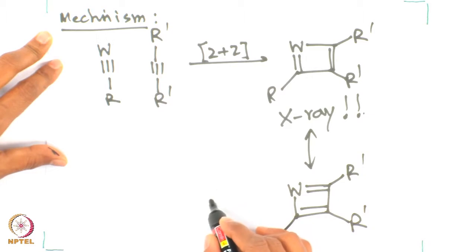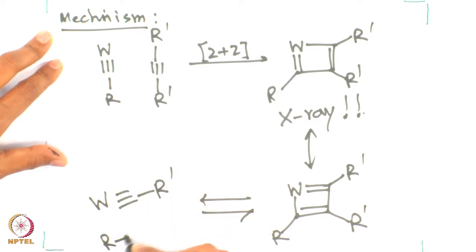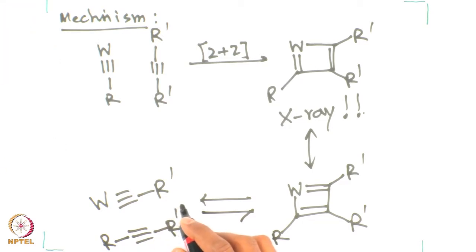Subsequently, undergoing retro 2+2, one can get a tungsten species with a new alkylidyne moiety. Overall, a new tungsten alkylidyne intermediate is obtained. Starting from the Schrock catalyst — tungsten alkylidyne — reacting with an alkyne gives a four-membered intermediate that is crystallographically characterized, clearly showing resonance between the two structures with equal bond lengths, providing a clear mechanistic picture of ring closing metathesis.